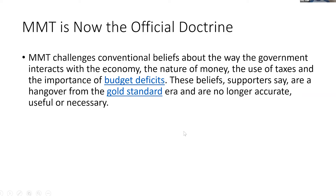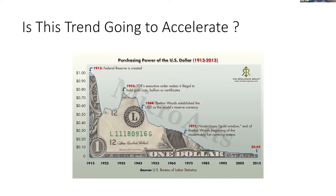This slide shows the purchasing power of the USD starting in 1913 at the establishment of the Federal Reserve. This data goes to 2013. In 1913, that's our starting point at full purchasing power. By 2013, that same dollar carries only five cents of purchasing power. The Fed reserve was established while we were still on the gold standard, meaning the amount of money in the economy was tied to the amount of gold in the system. Gold expands at about 2-3% per year through mining, which more or less coincided with economic growth.